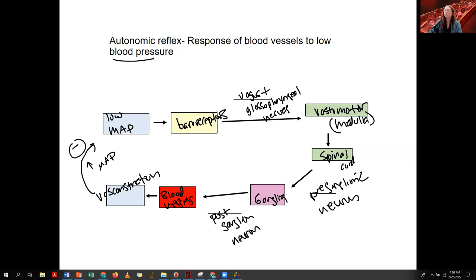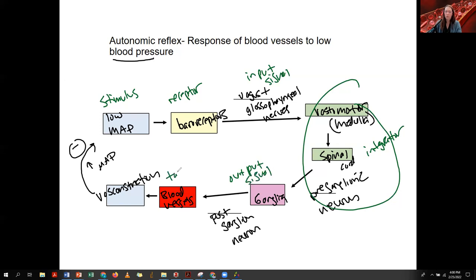And you should be able to label the components here. Fine, I'll do it. Stimulus. Receptor or sensor. Input signal. Remember this. This whole thing is integrator. And then we've got our output signal. This whole thing. Our target or effector and our response. This same pathway is going to also stimulate the cardio-acceleratory center to result in increased heart rate and increased contractility via the sympathetic nervous system. This output signal. So this is sympathetic.